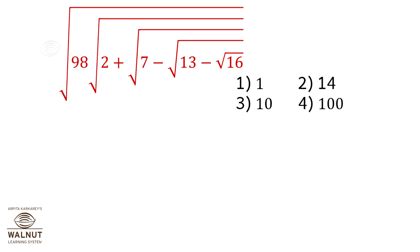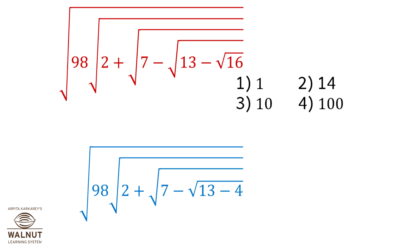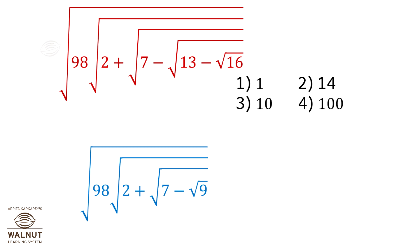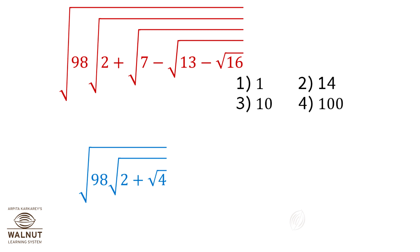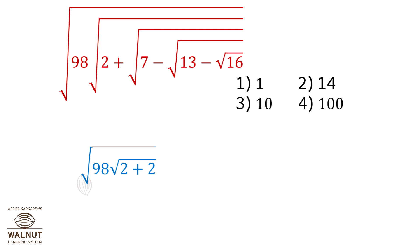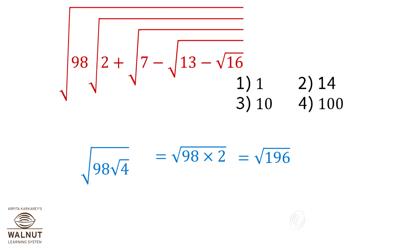Under root 98 times (under root 2 plus under root 7 minus under root 13 minus under root 16). This equals under root 98 times (under root 2 plus under root 13 minus 4), equals under root 98 times (under root 2 plus under root 9). That gives 98 times (under root 2 plus under root 7 minus 3), then under root 98 times (under root 2 plus under root 4), equals under root 98 plus under root 2 plus 2 times under root 98 times under root 4, equals under root (98 multiplied by 2), equals under root 196, equals 14.